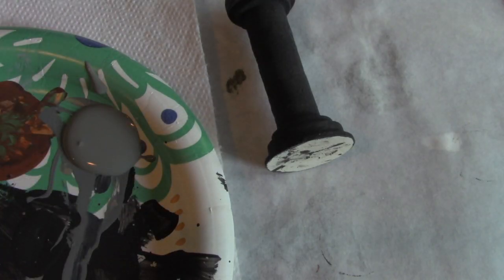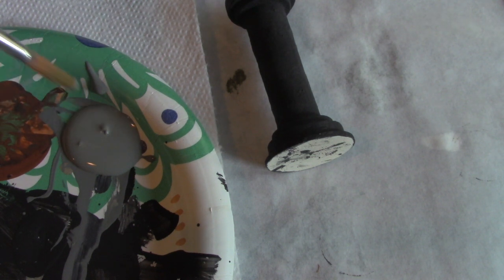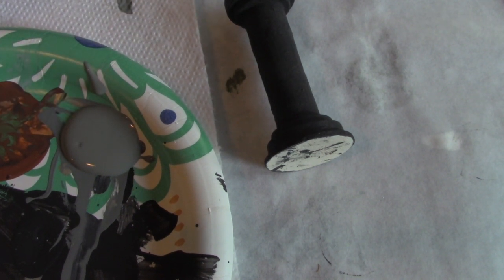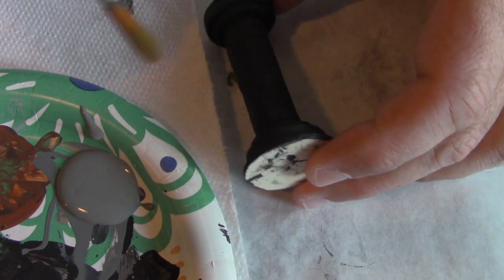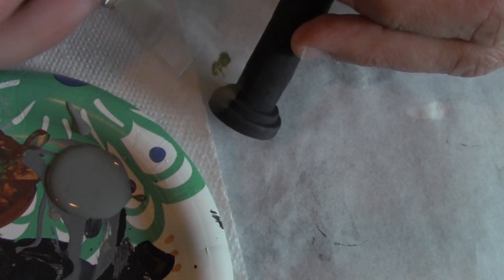So we have some dark gray on the palette and I dip my brush, just the bristles in there, and then I wipe it off and then I go back and forth like this.